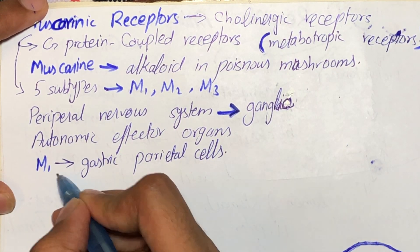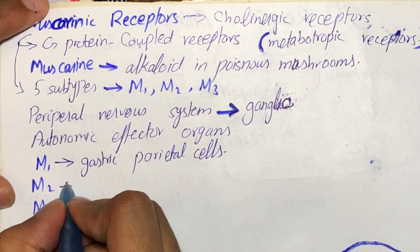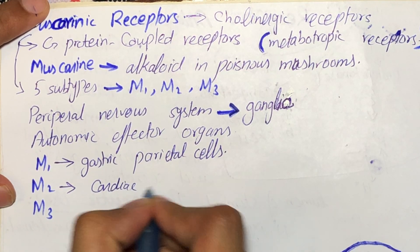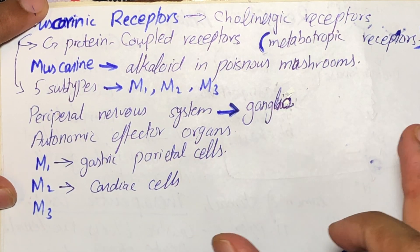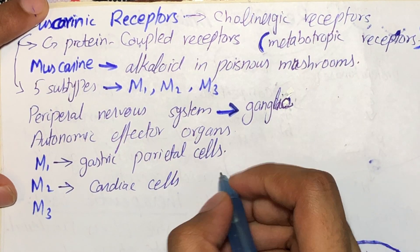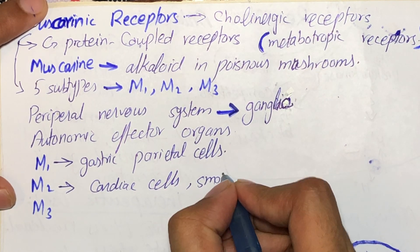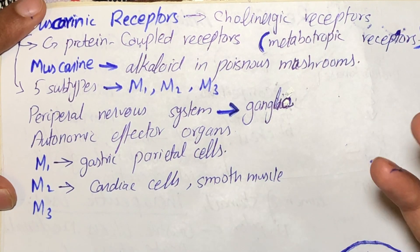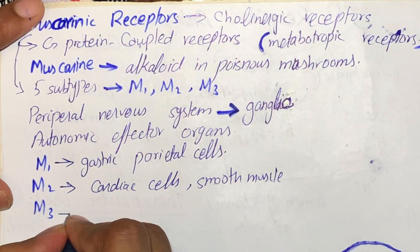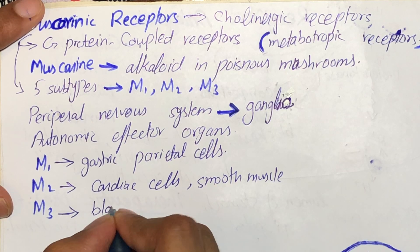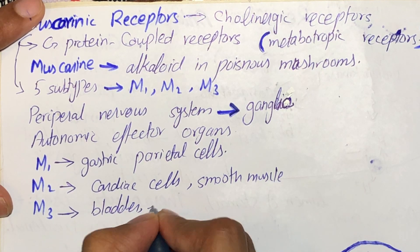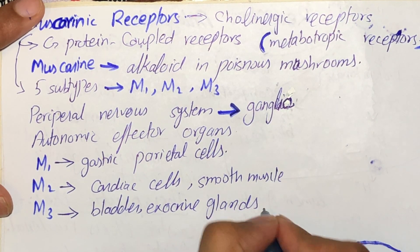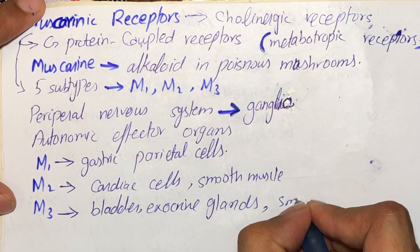M2 receptors are present on cardiac cells — the cells of heart muscles — and also on smooth muscles, which are present in the GI tract and blood vessels. M3 receptors are present on the bladder, exocrine glands, and also on smooth muscles.